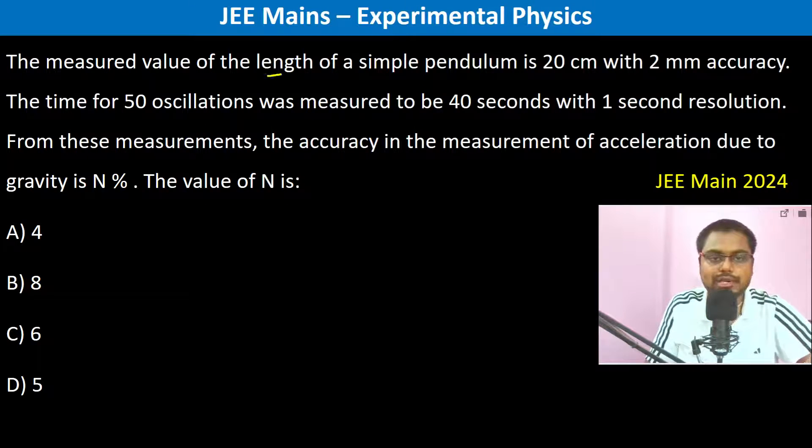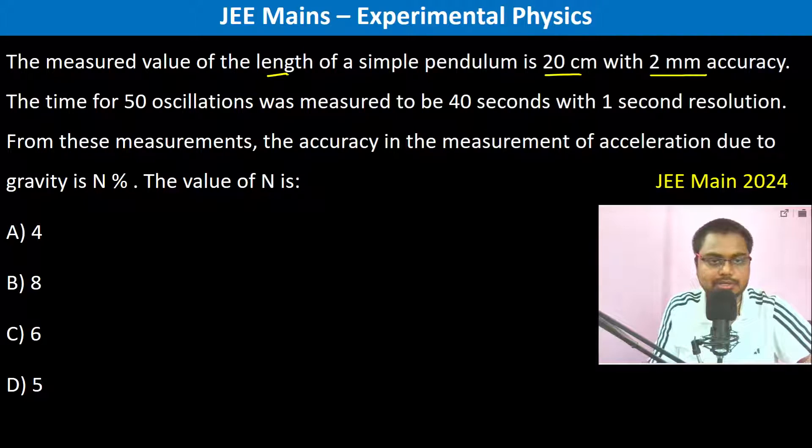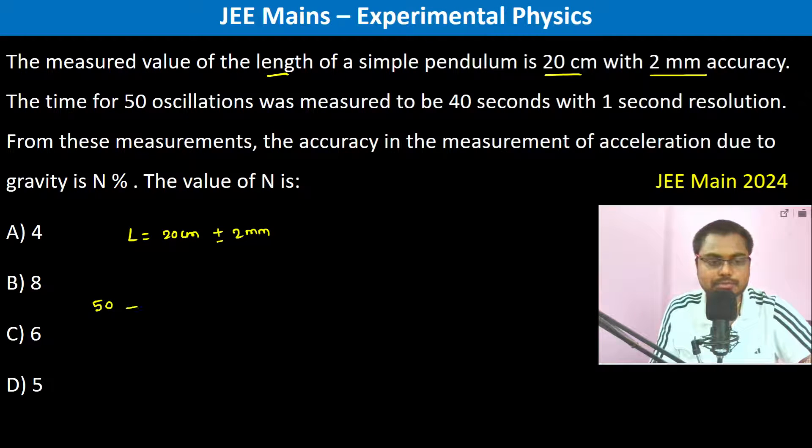The measured value of the length of a simple pendulum is 20 centimeters with 2 millimeter accuracy, so the length is equal to 20 centimeter plus minus 2 millimeter. The time for 50 oscillations was measured to be 40 seconds.